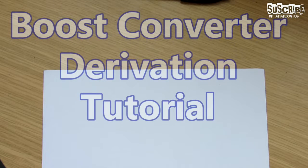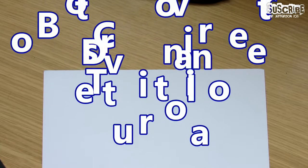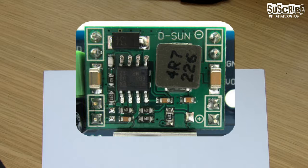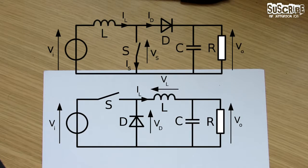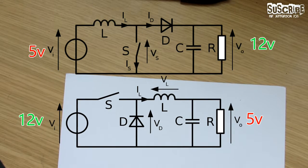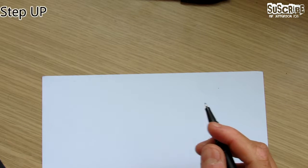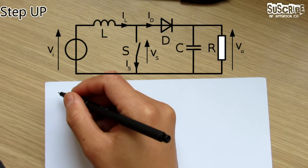Hello guys, welcome to my channel Mr. Jefferson 105. On today's video I am going to be showing you how to derive and do the maths behind understanding boost converters and buck converters. I think these circuits are very essential for any kind of step up and step down voltages — so from 5 volts to 12 volts or from 12 volts to 5 volts. They are very useful, and knowing the maths behind them makes you understand better how to build them. The first one we're going to be covering is the step up.